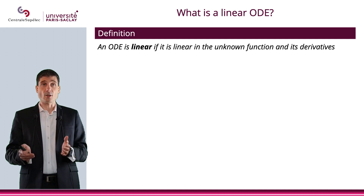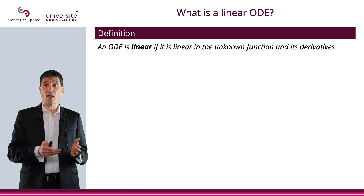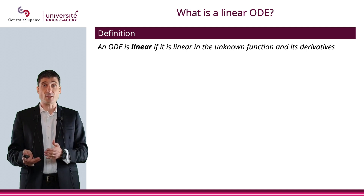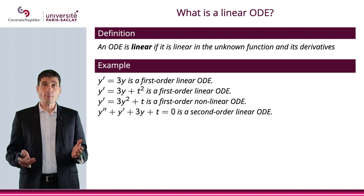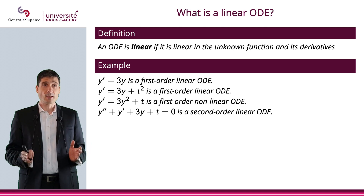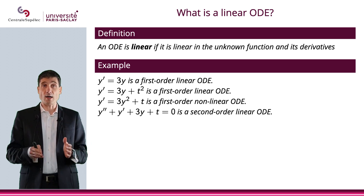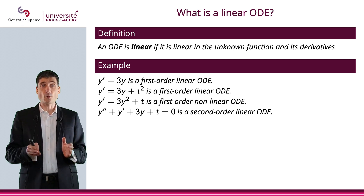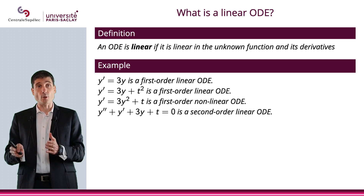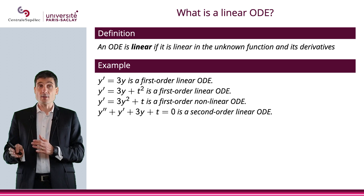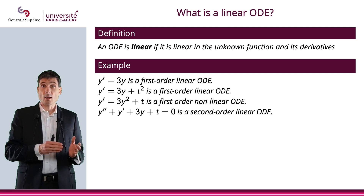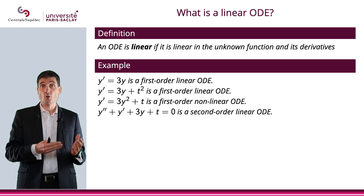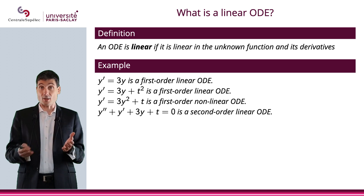An ODE is linear if it is linear in the unknown function and its derivatives. For example, y' equals 3y is a linear ODE. y' equals 3y plus t squared is also a linear ODE, because in the unknown function y and its derivative y' you are linear. So the t squared is not a problem.